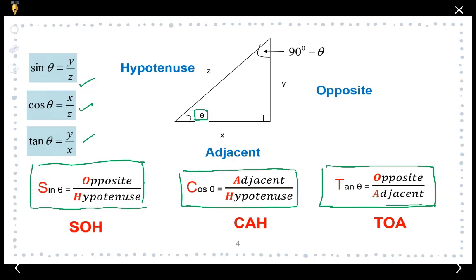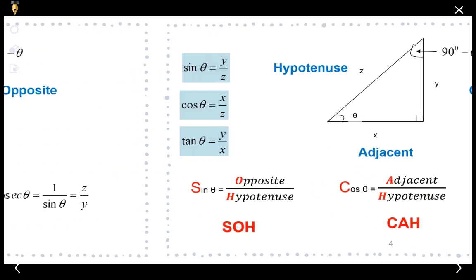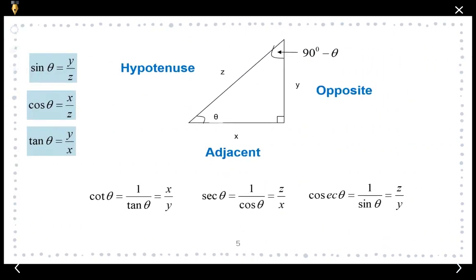From these ratios we must also be able to find cotangent, secant, and cosecant, because cotangent is one over tangent. So if you know your tangent, you will be able to find cotangent. The same goes for secant and cosecant.